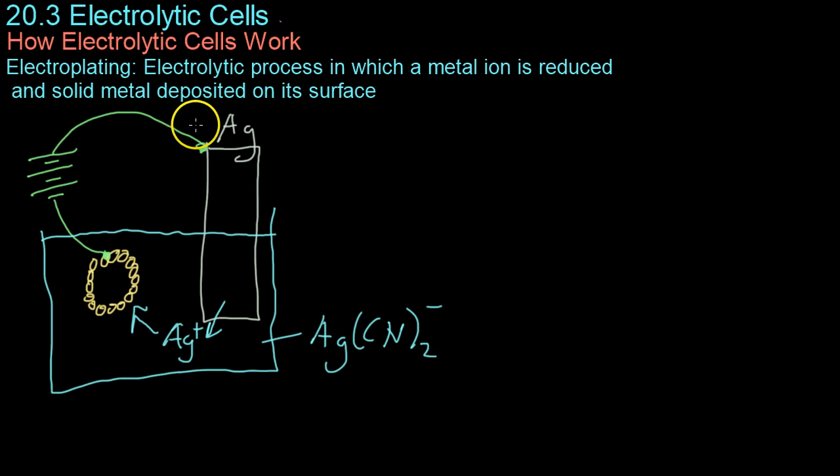So for a more specific electrolytic process, we'll now look at electroplating, which is an electrolytic process in which a metal ion is reduced and solid metal is deposited on its surface. In this case, you have solid silver dissolved in a solution of silver cyanide.